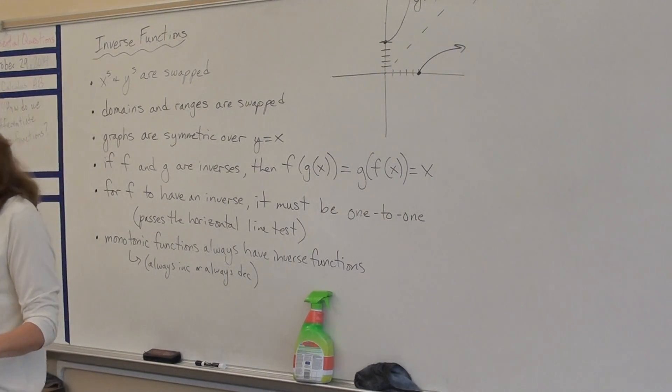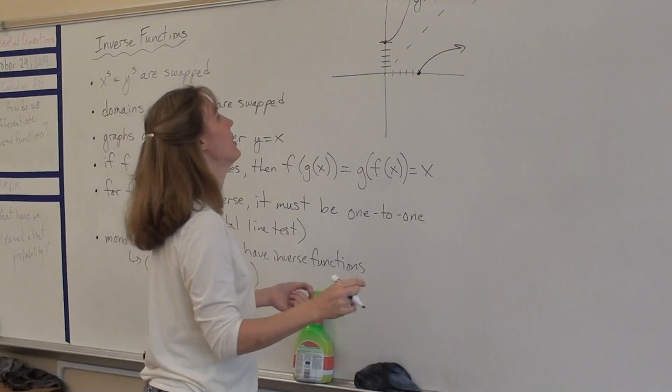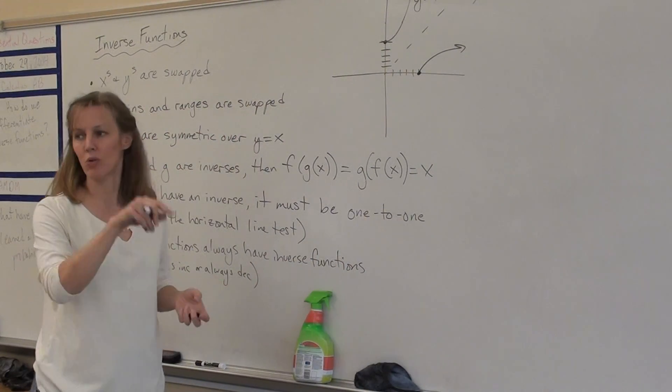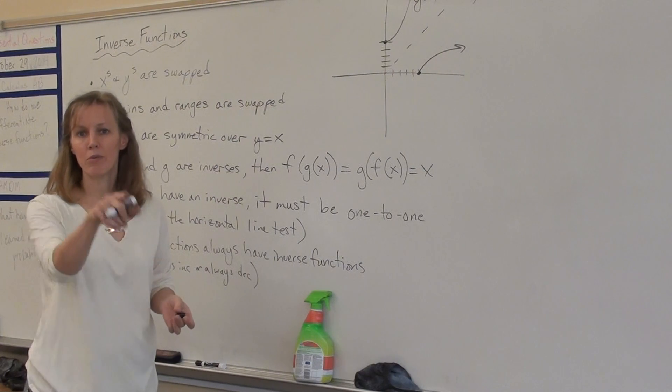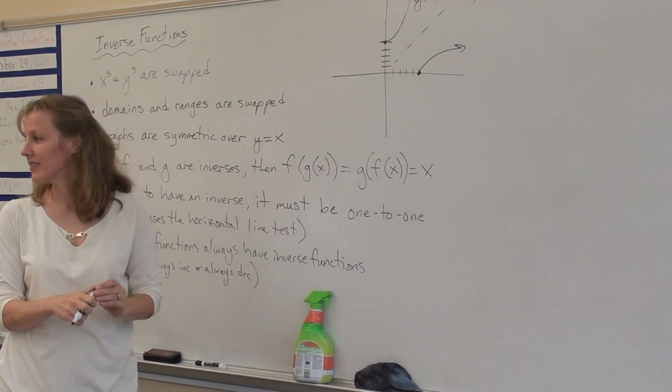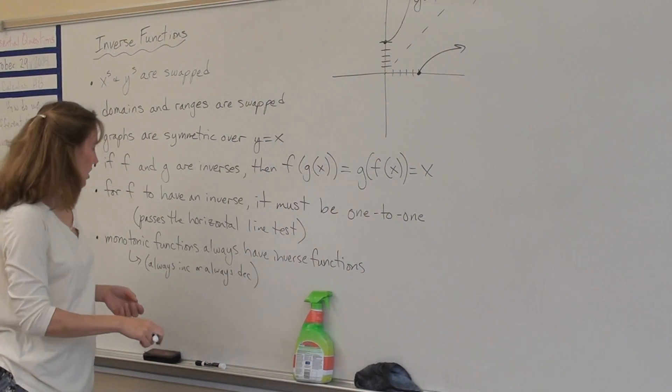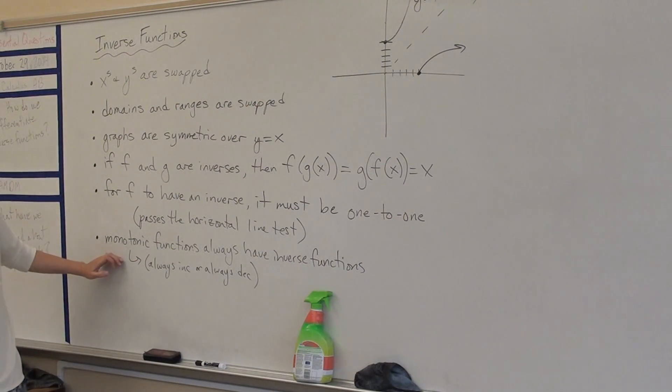So a function has to pass the horizontal line test in order for its inverse to also be a function. So monotonic means the function is always increasing or always decreasing. You can kind of think of it as meaning one directional.